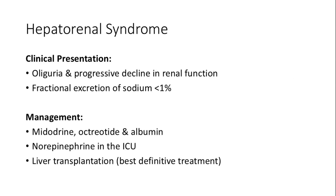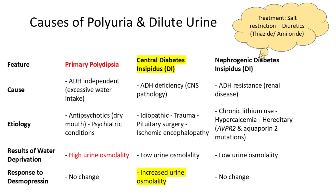Hepatorenal syndrome involves a decline in renal function with oliguria and low FeNa, and is managed with medications like midodrine, albumin, and octreotide, with liver transplantation being the definitive treatment.